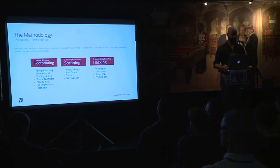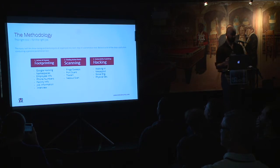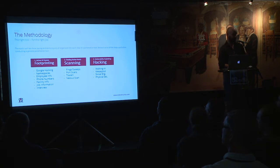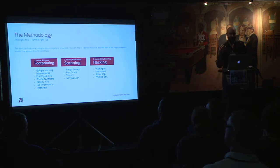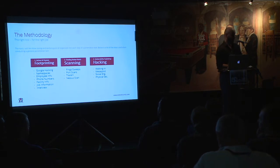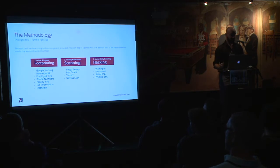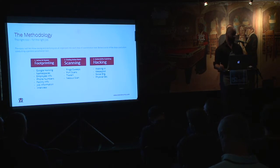The very first step is footprinting. There's an active and passive type. You always want to start with passive — using Google, using Monster.ca to see if your target has job postings that reveal what technology they use, like MySQL, PHP, or a specific version of Windows Server. Afterwards, you move to active scanning: ping sweeps, traceroutes. The Gnosis vulnerability scan is great. Then from there, you conduct hacking.